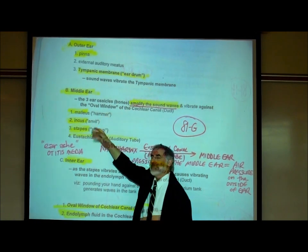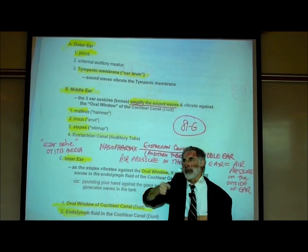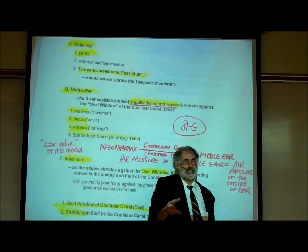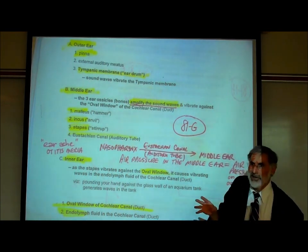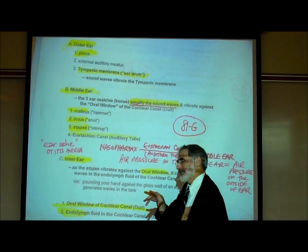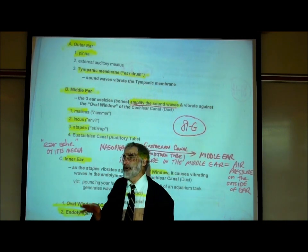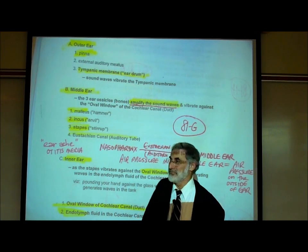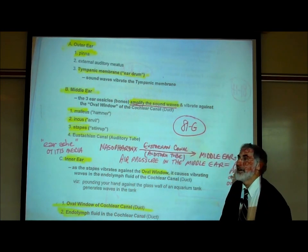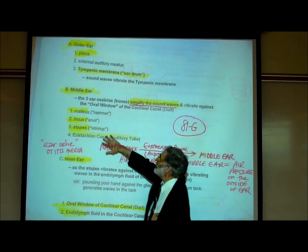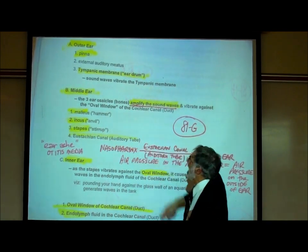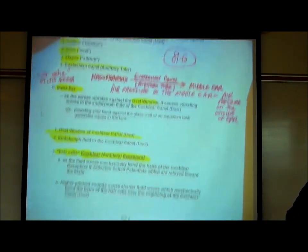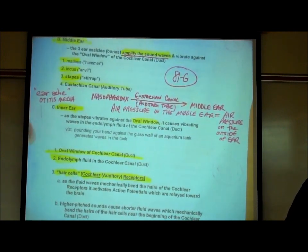The three ear bones are: the malleus or hammer — like the word mallet. The incus or anvil. And the stapes, which is Latin for stirrup, because it's shaped like the stirrup you put your feet into if you're riding a horse. Also part of the middle ear is the eustachian canal or auditory tube.